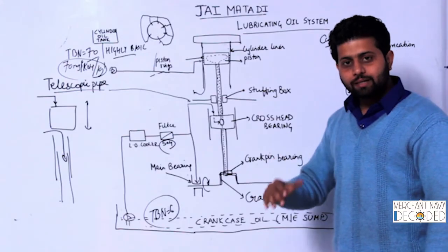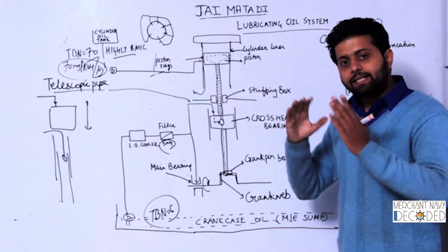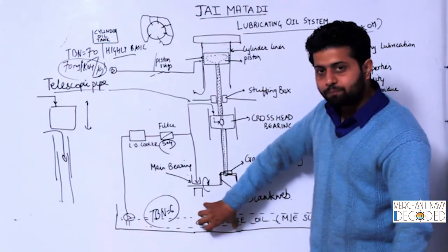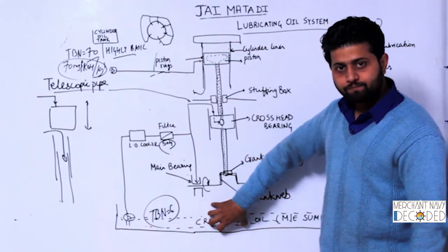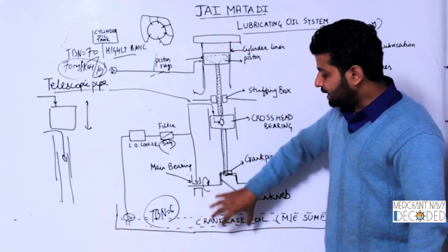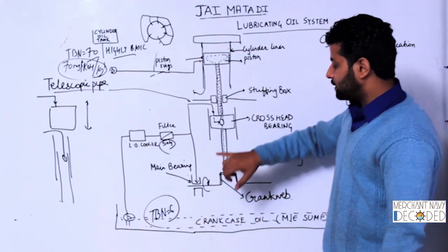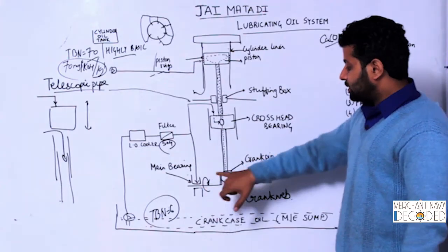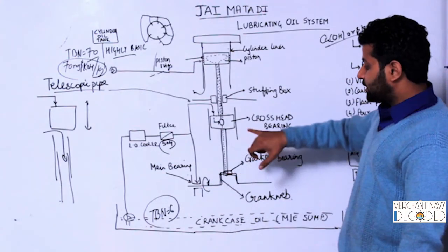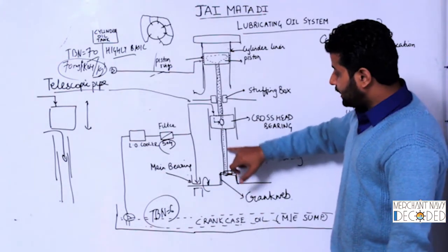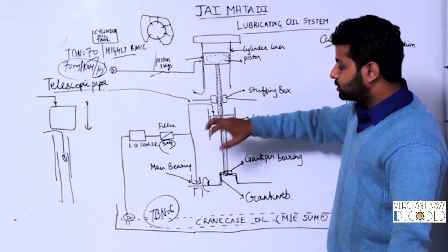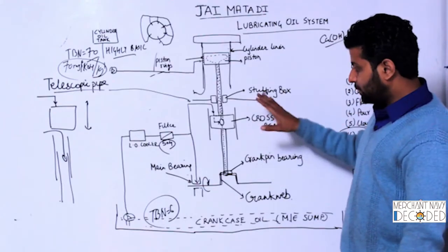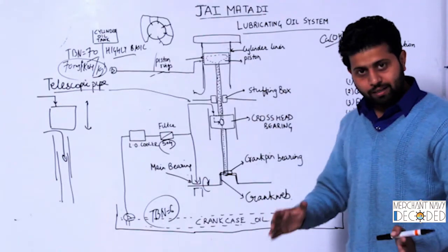On the contrary, in a 4-stroke engine in a generator, it is very different. There we have only one sump, and that oil is sent to the crankpin bearing, main bearing, and through the connecting rod to the piston as well.